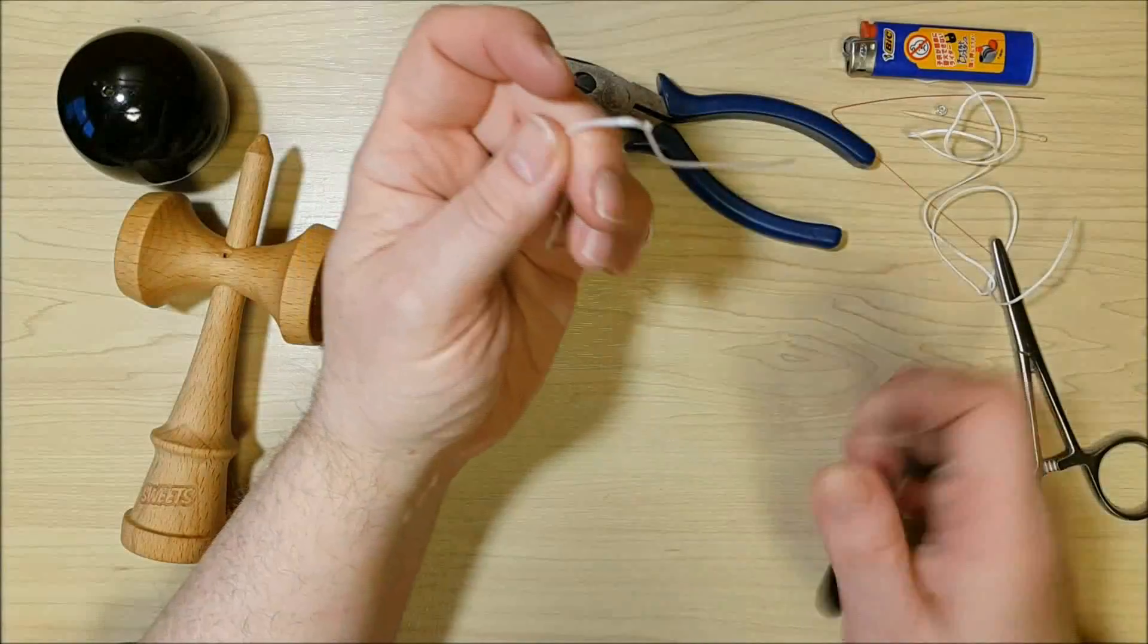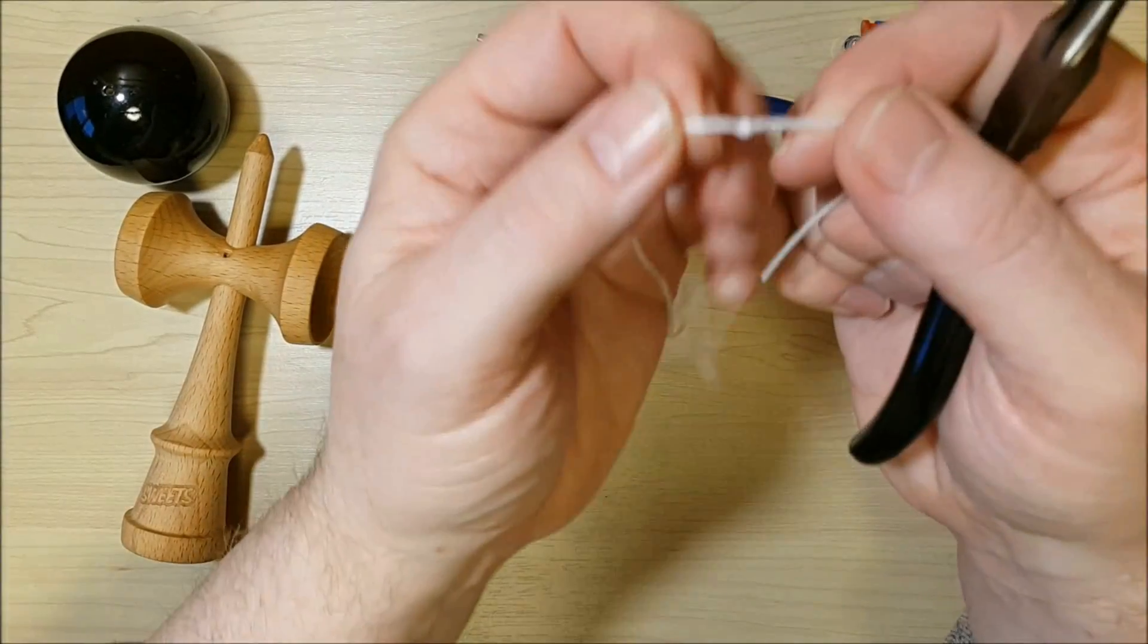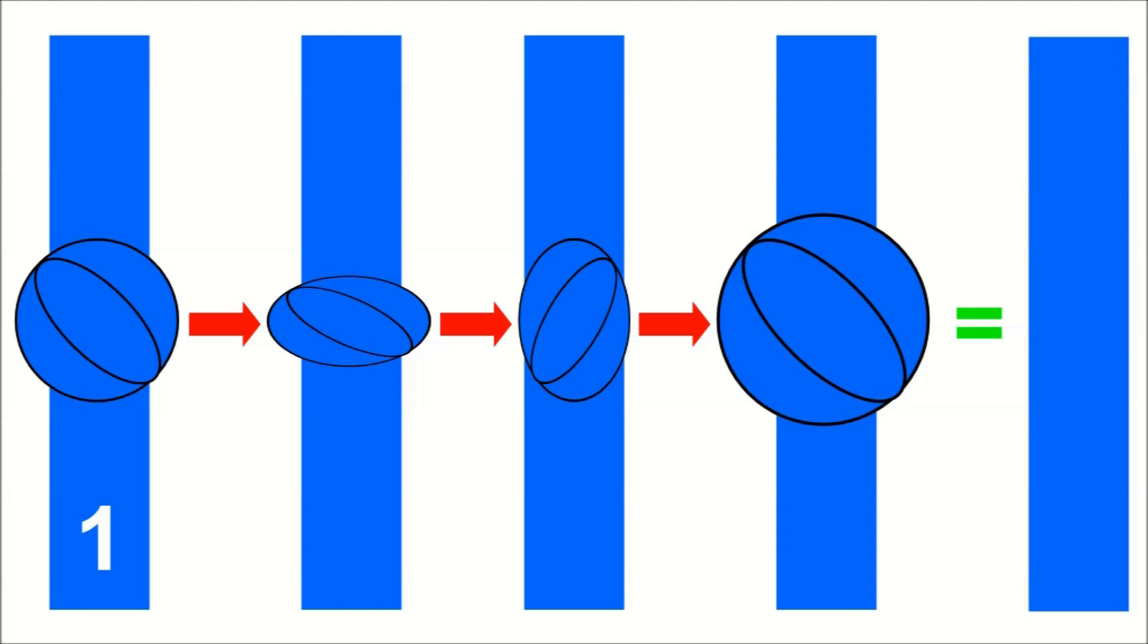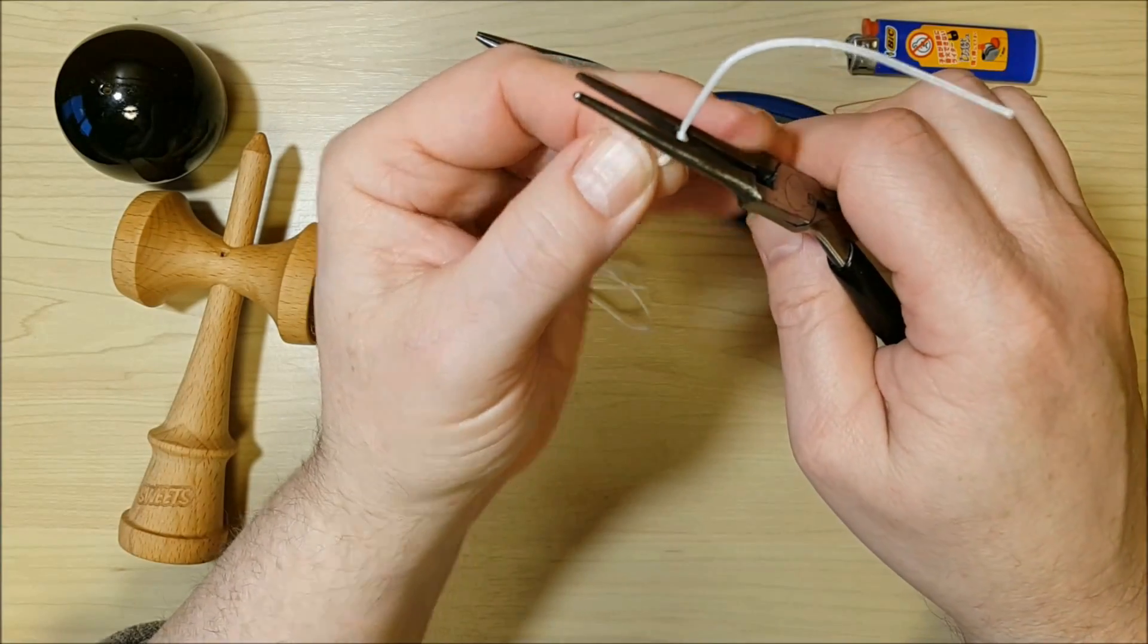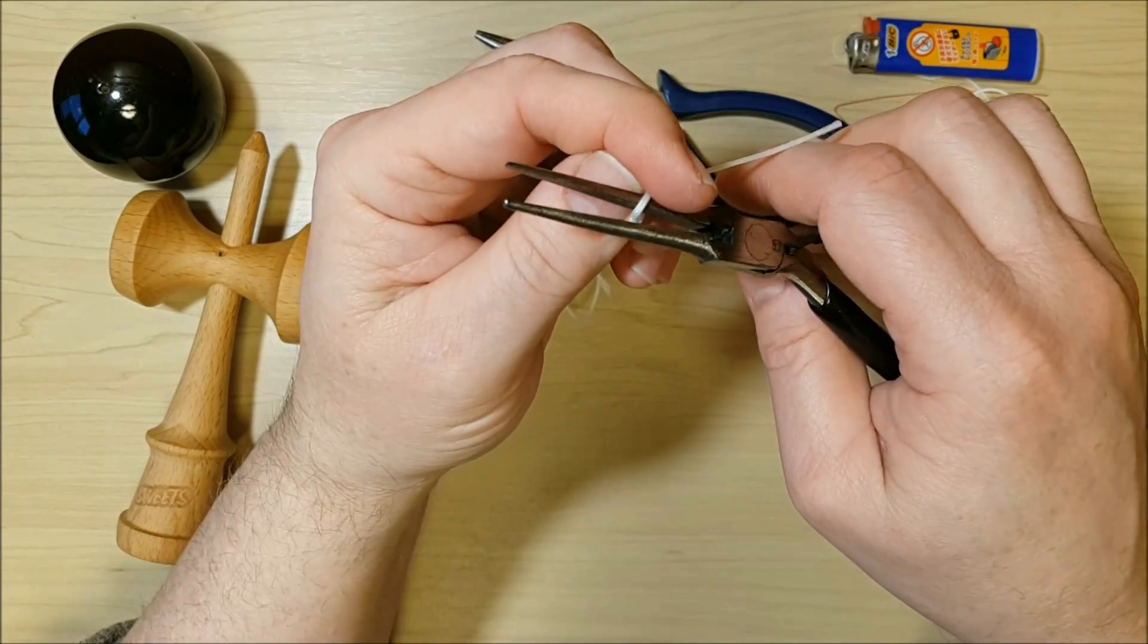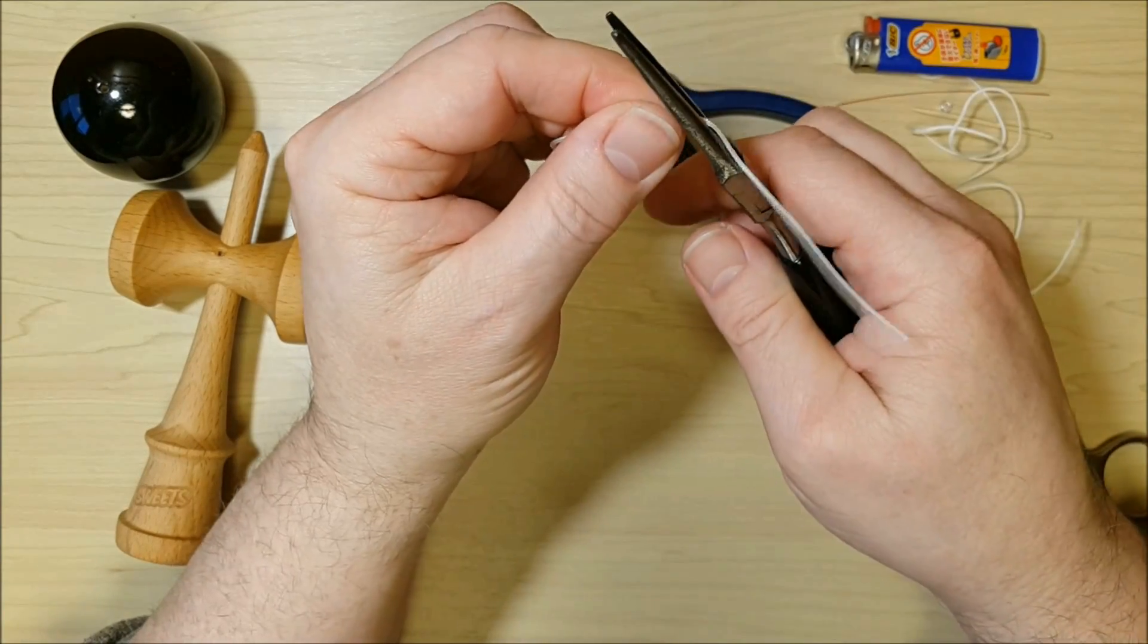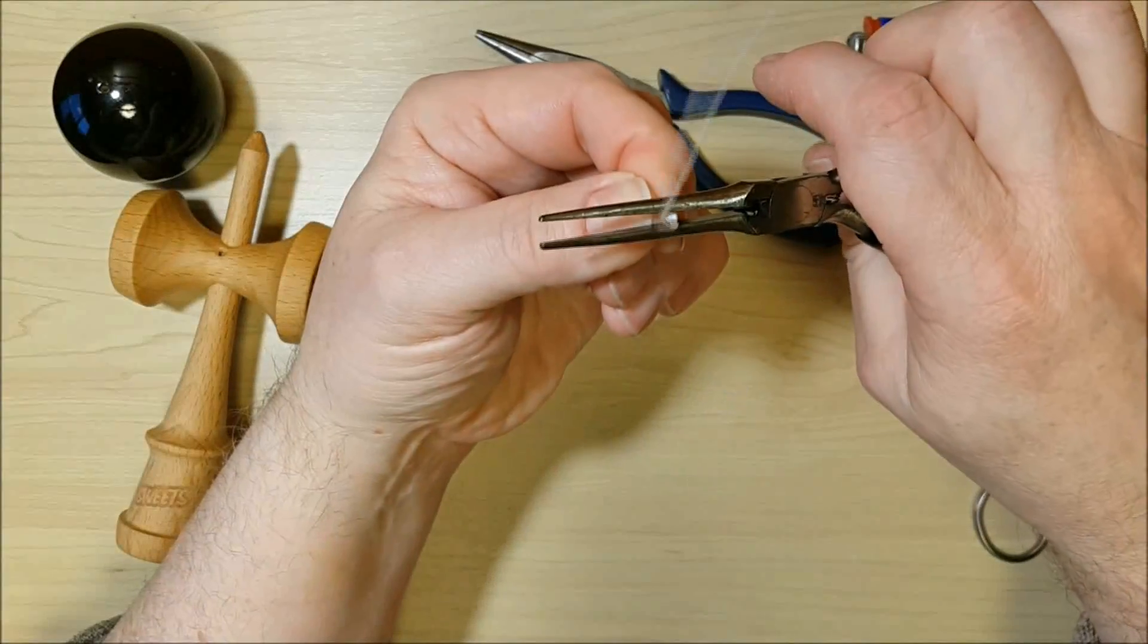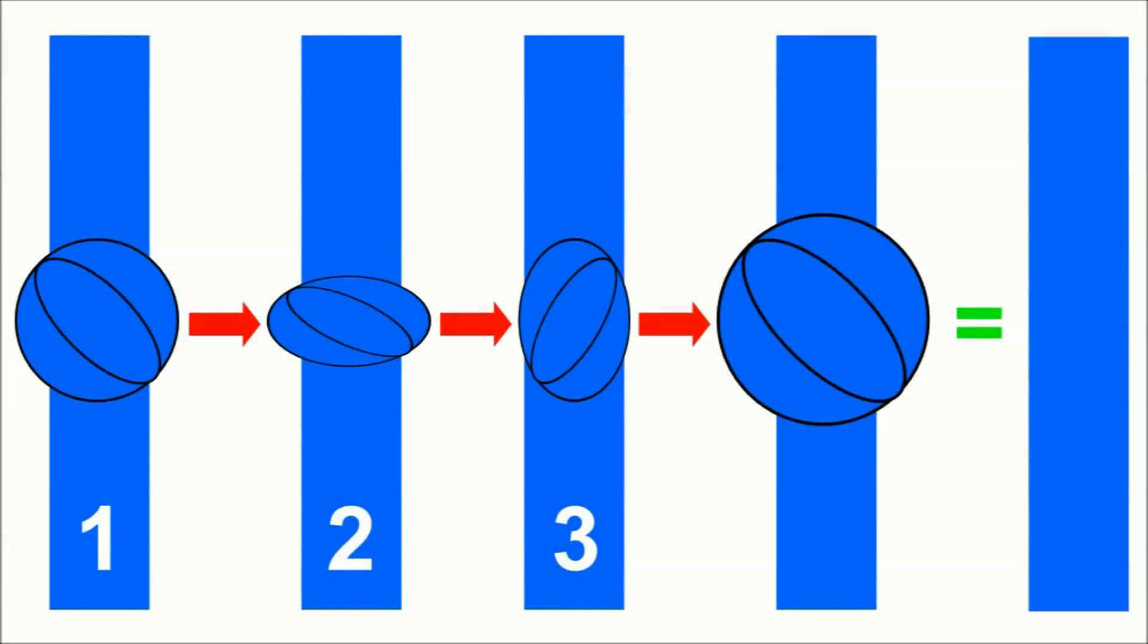The object is to crush the knot to loosen it. First, flatten the knot. Then turn 90 degrees and crush again. Repeat as needed.